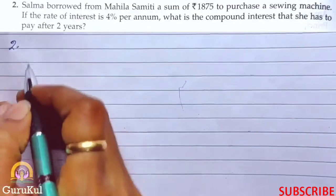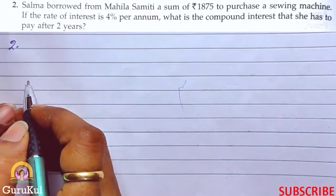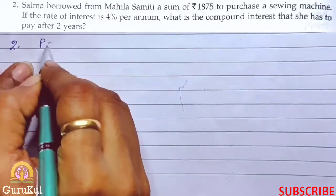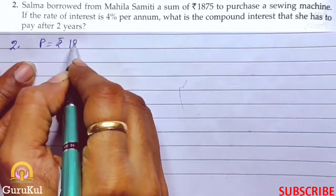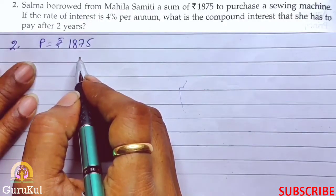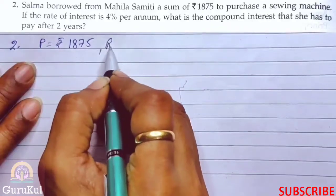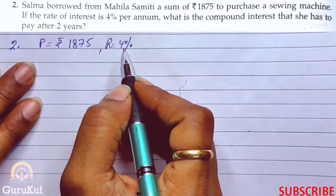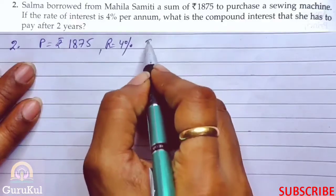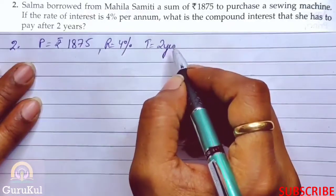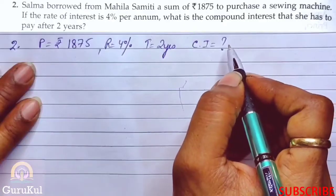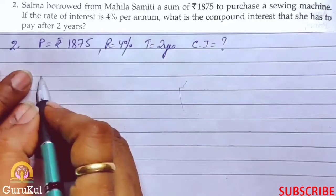Question number 2: Salma borrowed from Mahila Samiti a sum of ₹1875 to purchase a sewing machine. If the rate of interest is 4% per annum, what is the compound interest that she has to pay after 2 years? So the principle is ₹1875, rate is 4%, time is 2 years, and we need to find the compound interest.